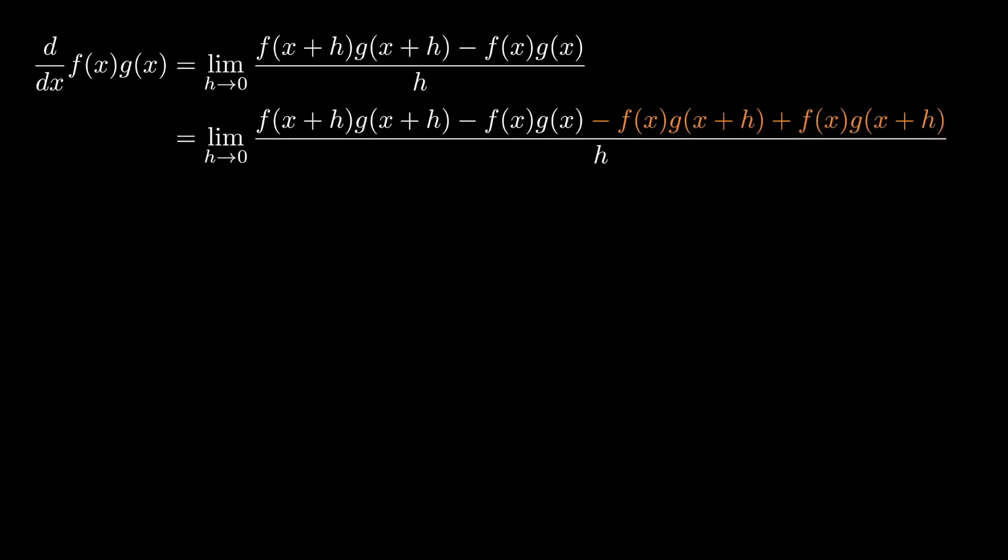A slightly more involved example is to look at the product rule of differentiation. As before, we write out the limit explicitly. Here we have to do a little bit of a trick, though. We have to add and subtract the product of f(x) and g of x plus h. Then we can collect terms into two pieces, one with g of x plus h and the other with just f of x.